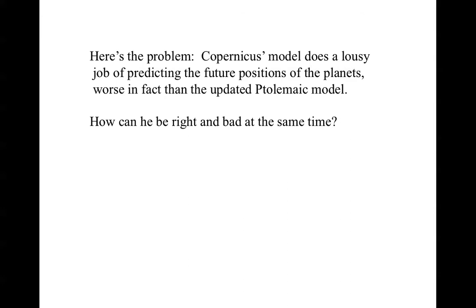Here's the problem. Copernicus' model simplifies the explanation of retrograde motion, but it does a lousy job of predicting the future positions of the planets — worse, in fact, than the updated Ptolemaic model. So how can it be right and bad at the same time? The problem with Copernicus' model is that he took one idea from the Greeks that turns out to be incorrect.